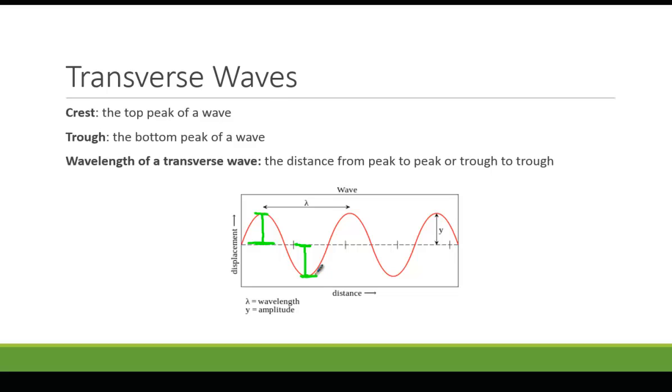And then wavelength is the distance from crest to crest or from trough to trough. So this distance right here would be the wavelength lambda, as you can see it labeled there. So transverse wave is the type of wave you're a little more familiar with throughout your life.